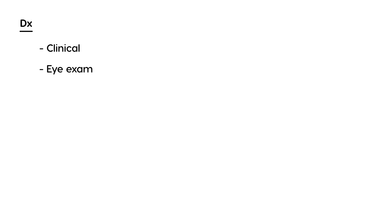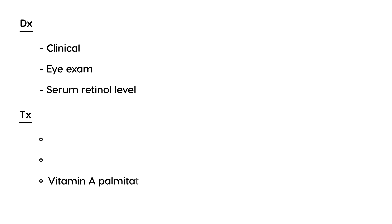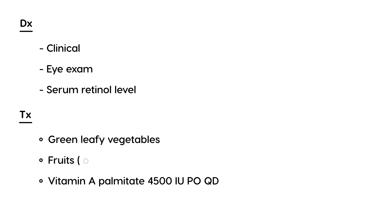Diagnosis is largely clinical, based on history and symptoms, but an eye exam can show keratomalacia. There is also a lab test — a retinol level — which will be low. In terms of treatment, it's a combination of replacement with vitamin A, specifically vitamin A palmitate given at 4,500 international units orally every day. You also encourage the patient to eat foods high in vitamin A, such as leafy green vegetables, and fruits such as oranges and carrots.